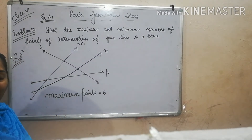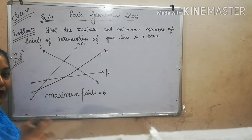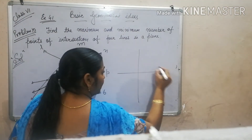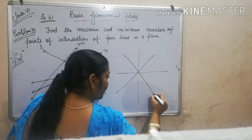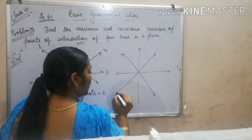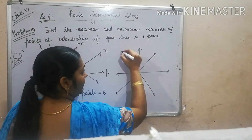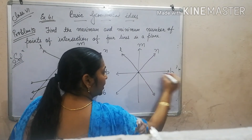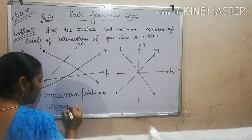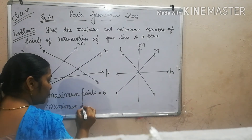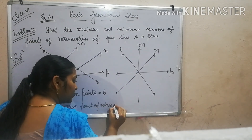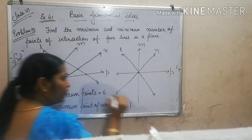Now for the minimum points, the problem is similar as for the three lines. These are the four lines which are intersecting at one point. So the minimum point of intersection is equal to one.